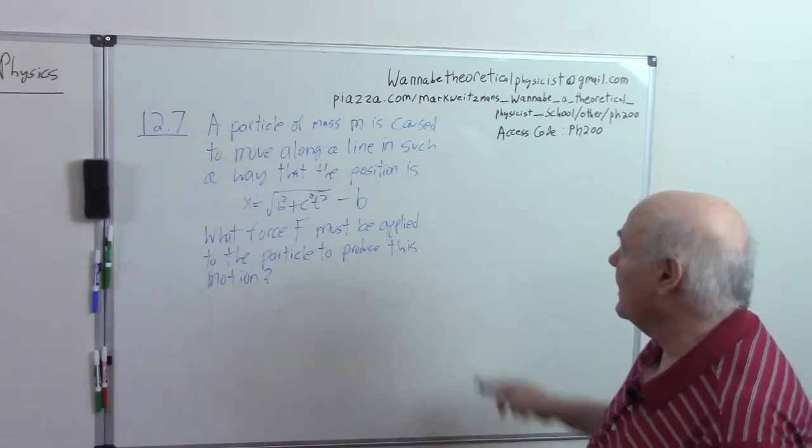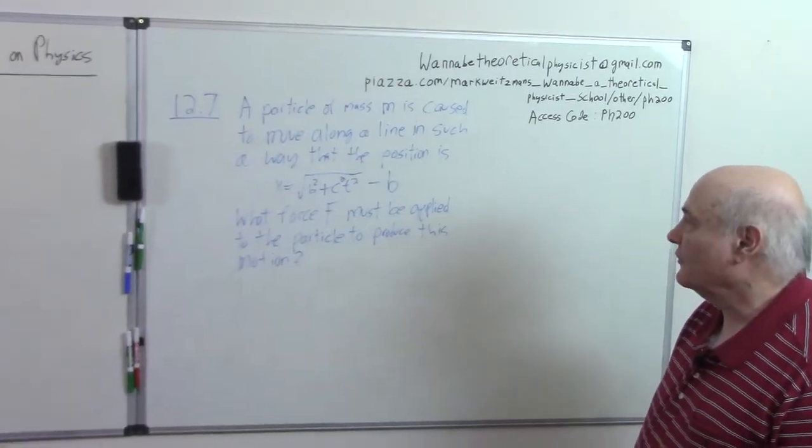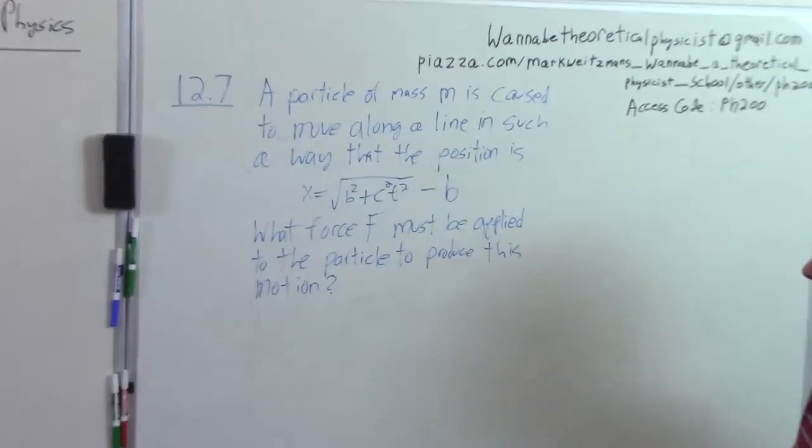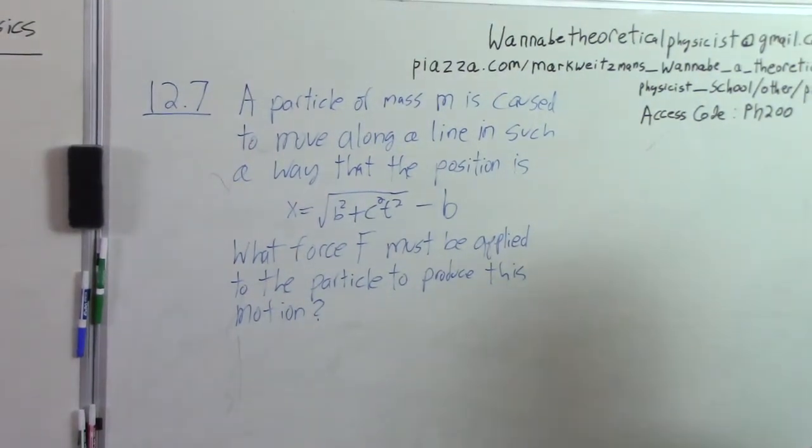So the first problem is a particle of mass m is caused to move along the line in such a way that the position is x equals square root of b squared plus c squared t squared minus b. What force f must be applied to the particle to produce this motion?